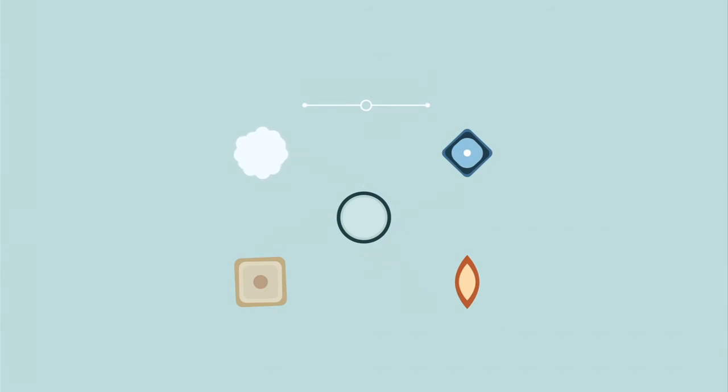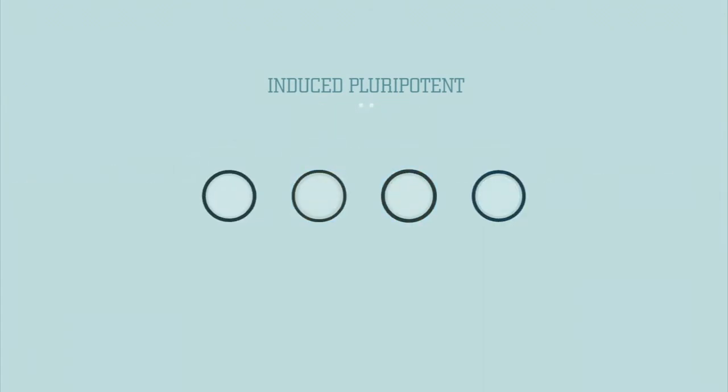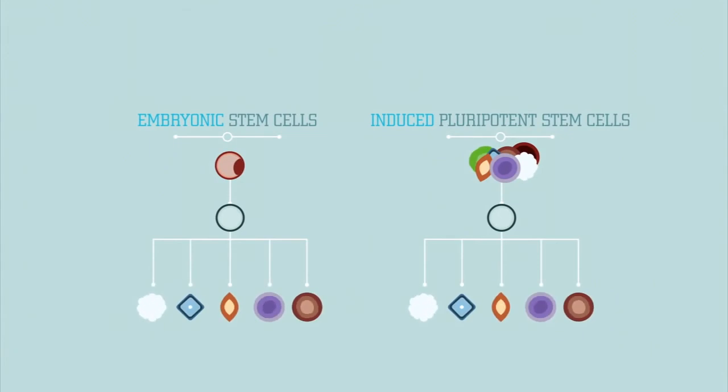A third kind of stem cells is called induced pluripotent stem cells. These are regular skin, fat, liver, or other cells that scientists have changed to behave like embryonic stem cells. Like embryonic stem cells, they too can become any kind of cell in the body.